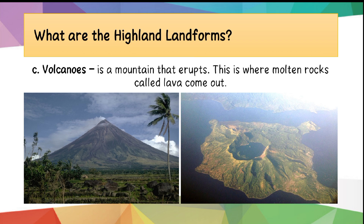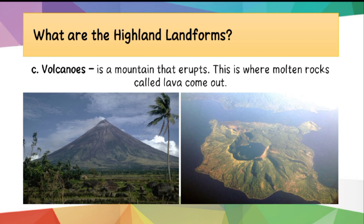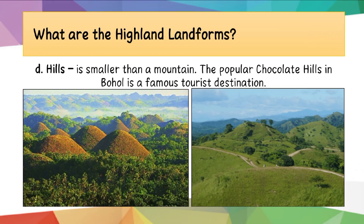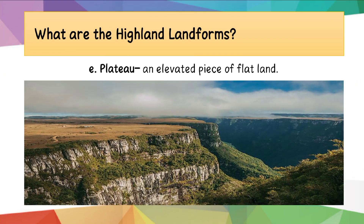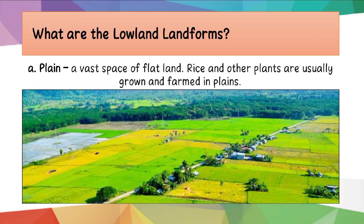Here is an example of volcanoes. Next we have hills. Hills are smaller than a mountain. The popular Chocolate Hills in Bohol is a famous tourist destination. Here is a picture of hills. Next we have plateau — an elevated piece of flat land. Here is a picture of a plateau.